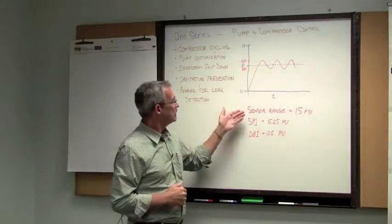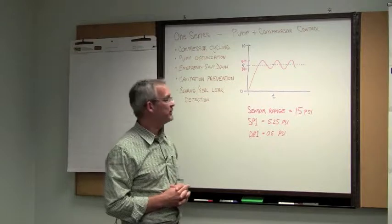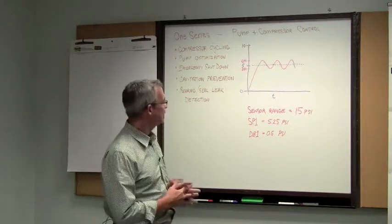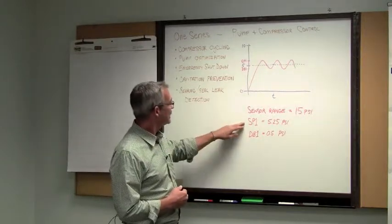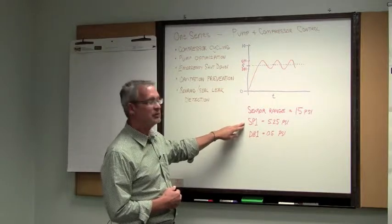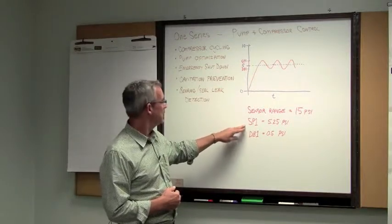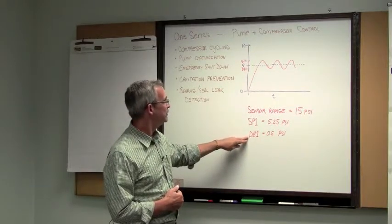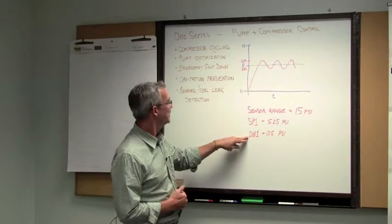The example that we're using today, we have a sensor range of 15 psi. I have an example on the table here. We're going to set our set point at 5.25 psi and the dead band at half a psi.